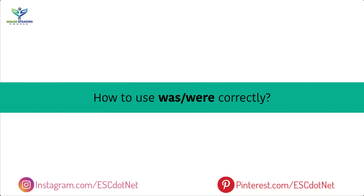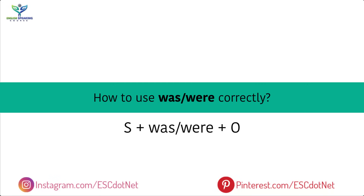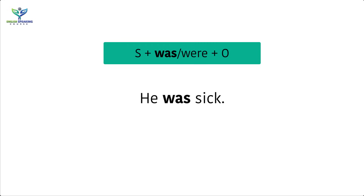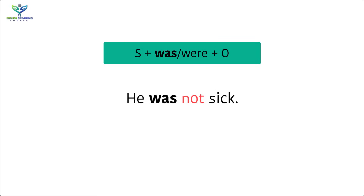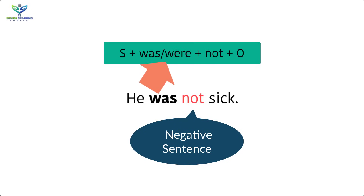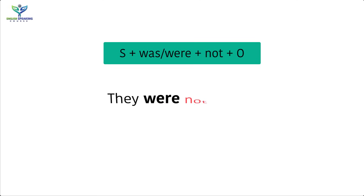How to use 'was' and 'were' correctly? The affirmative sentence structure is: Subject + was/were + object. For example: 'He was sick.' To make a negative sentence, the structure is: Subject + was/were + not + object. Using 'not' makes the sentence negative. For example: 'He was not sick.' and 'They were not happy.'